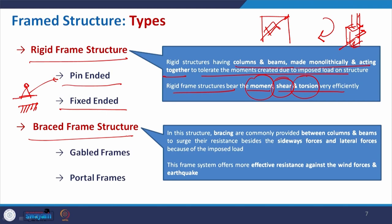Compared to that, the braced frame structure is the structure where bracings are commonly provided between columns and beams, as I have shown here, for the resistance of sideway forces or lateral forces. The previous rigid frame and other combinations basically take care of the gravity load, and the braced frame is basically taking care of the lateral load.